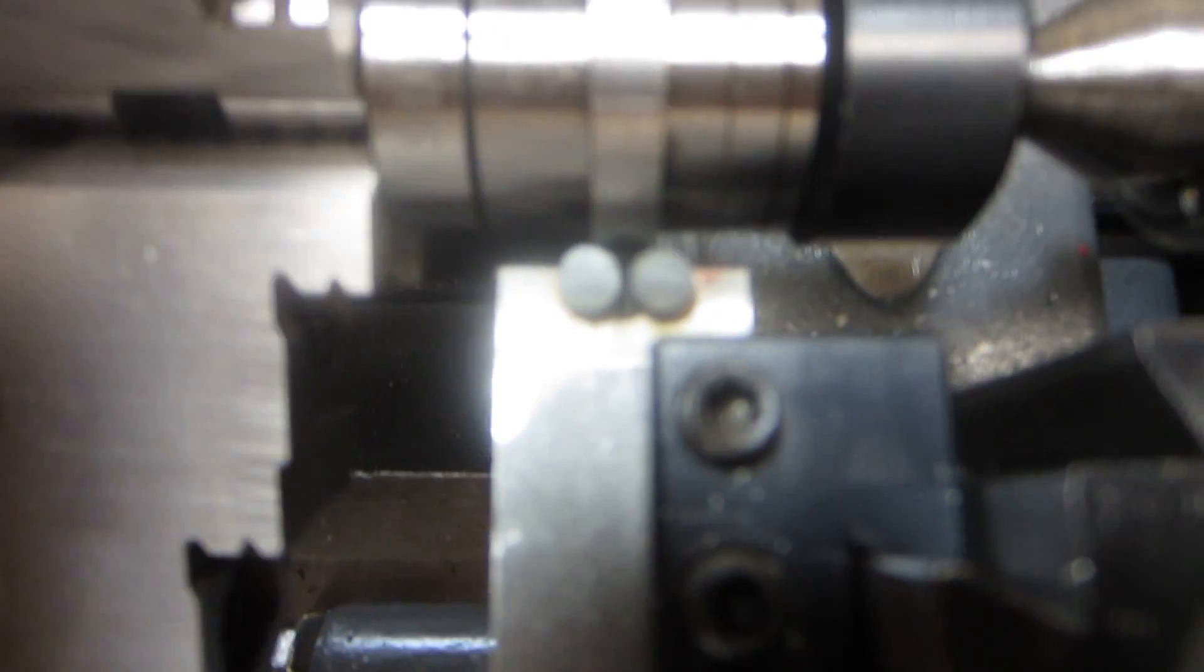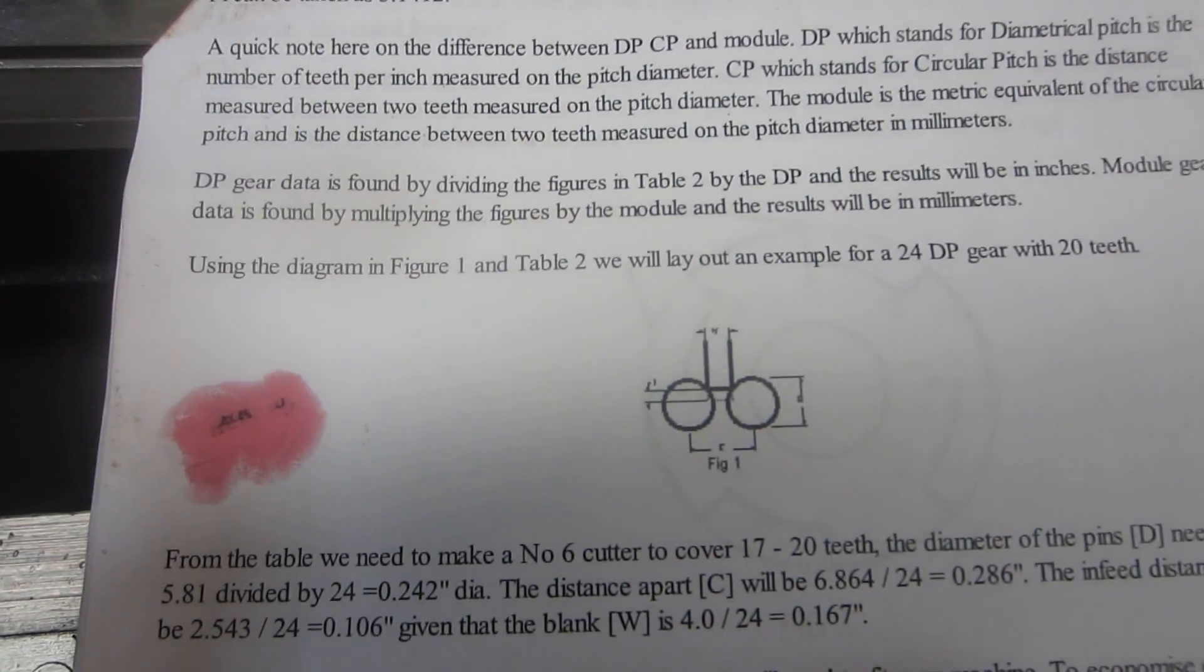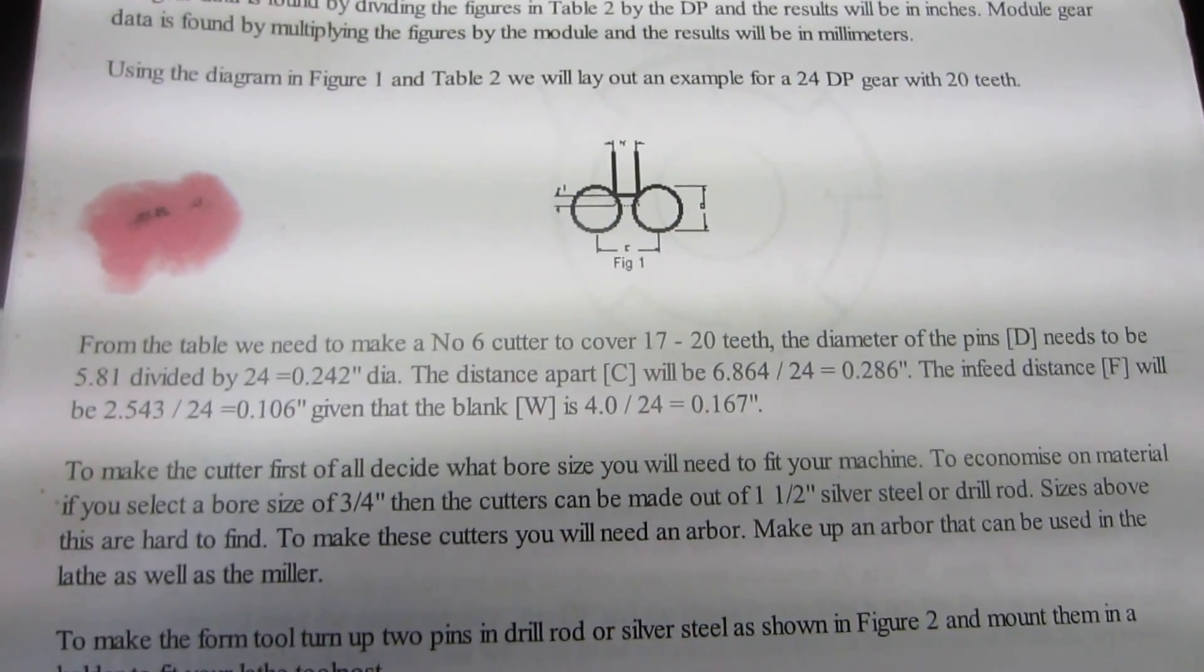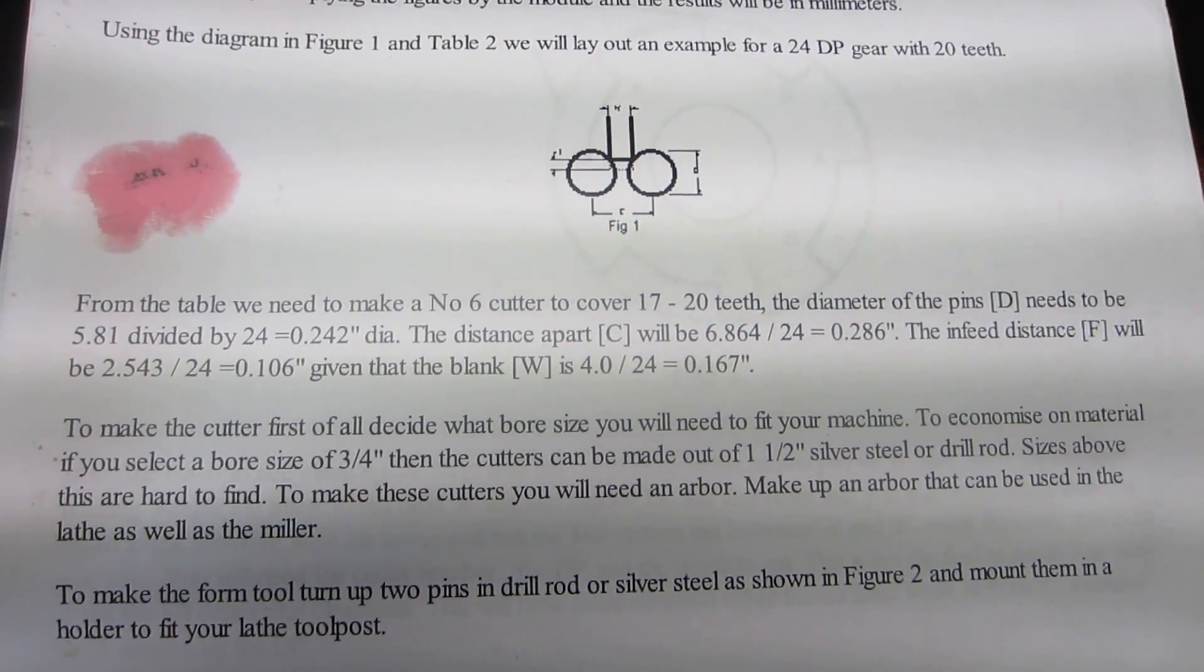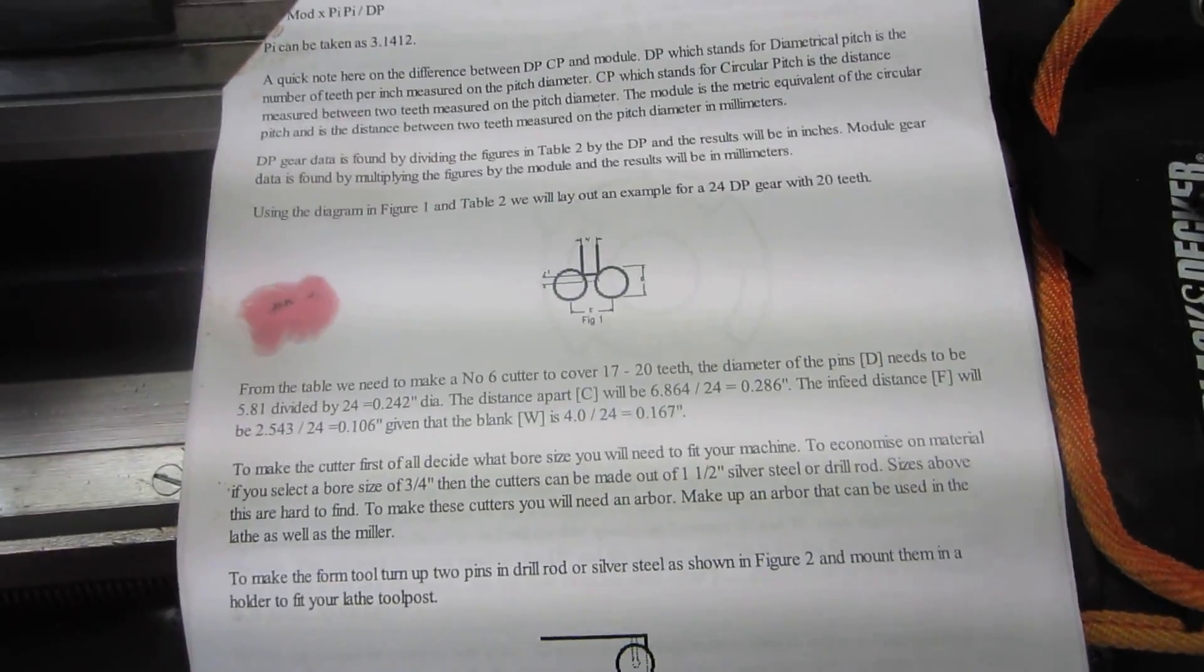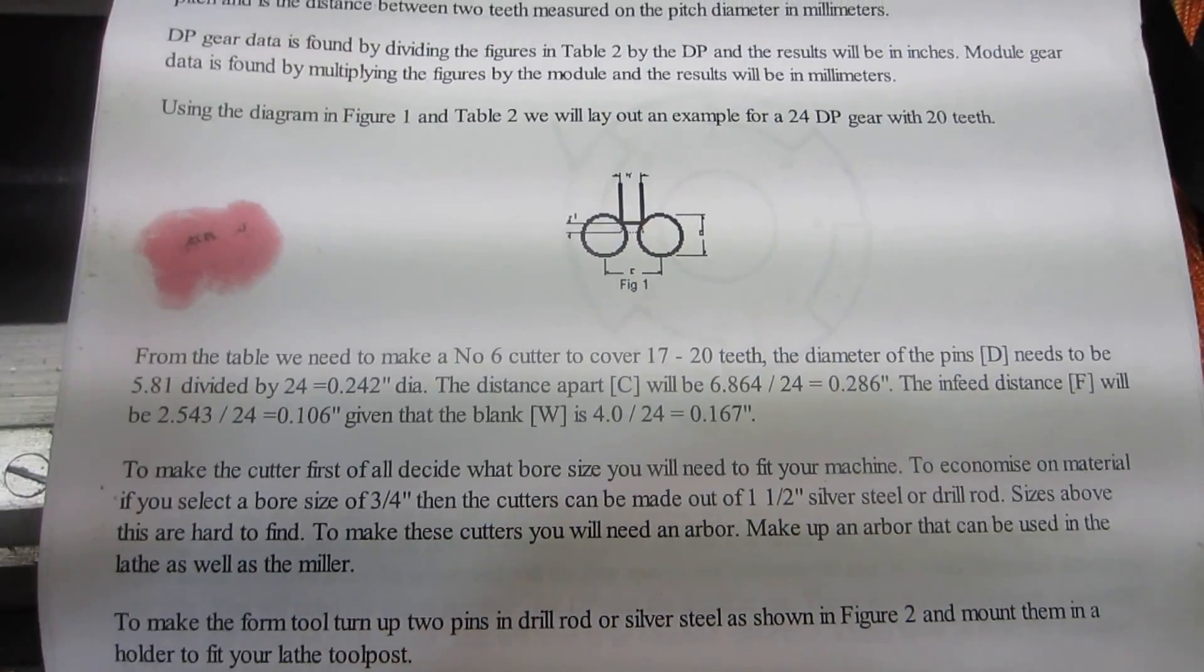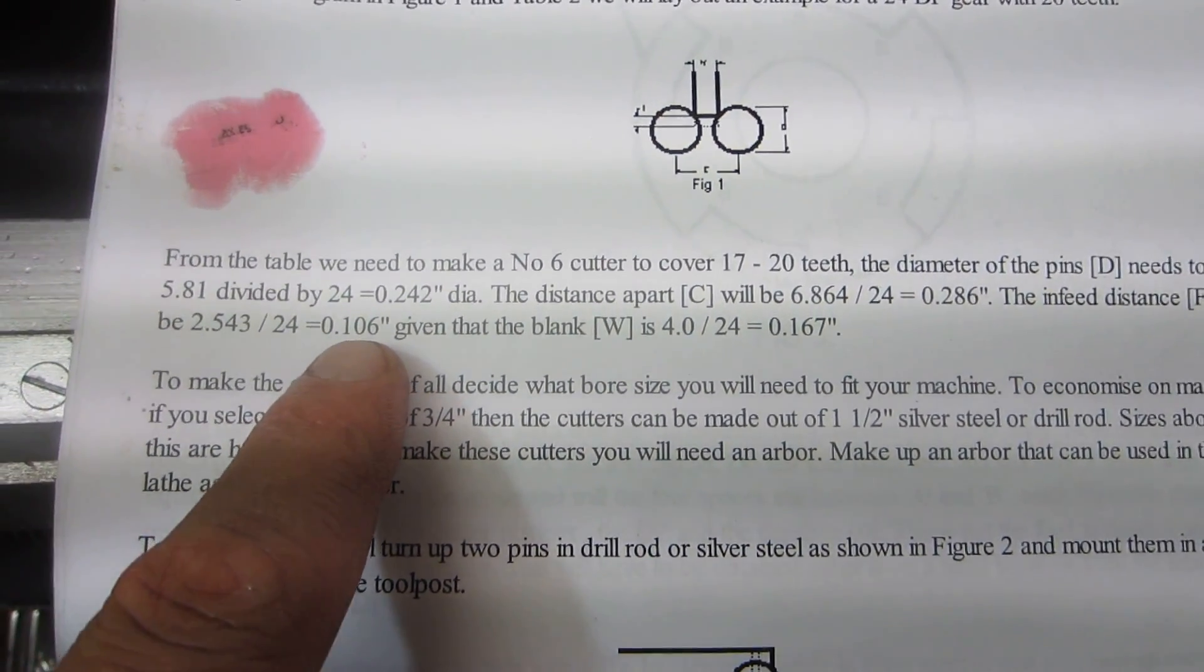So these are button cutters, homemade button cutters. This is a formula I'm just trying out just to get it started. That's just red Loctite, so don't worry about that. Nothing bad happened. And I'm doing a 24 diametral pitch gear here, and this is the number 17 to 20 teeth. And so I'm just basically following the formula that's in here. I made the cutters, I'm now down to the in feed.